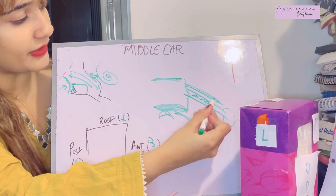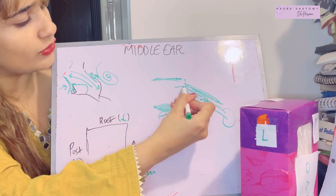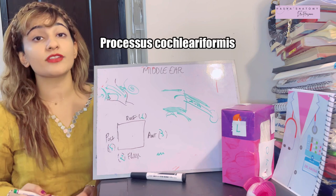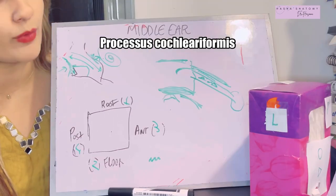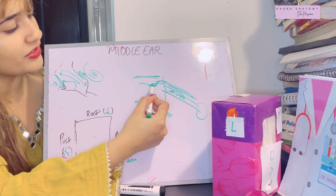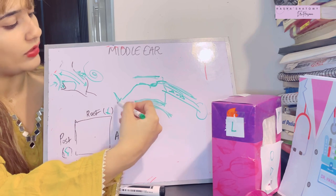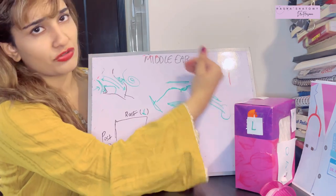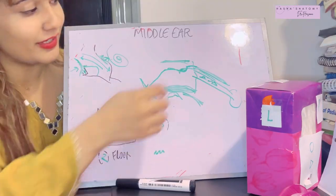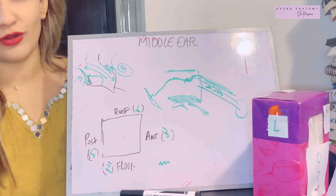Between the canal for the tensor tympani and the auditory tube there is a bony septum. This septum extends to the medial wall, where it forms a curved lamina known as the processus cochleariformis. The tensor tympani muscle wraps around this and uses it as a pulley to reach its insertion on the tympanic membrane — otherwise it would have no way to get there.